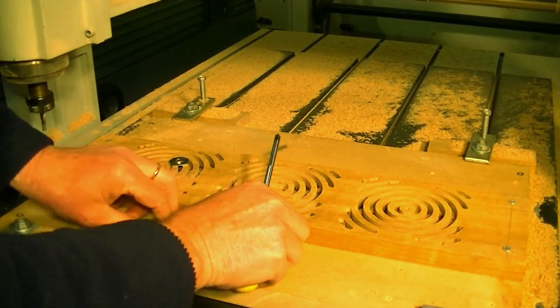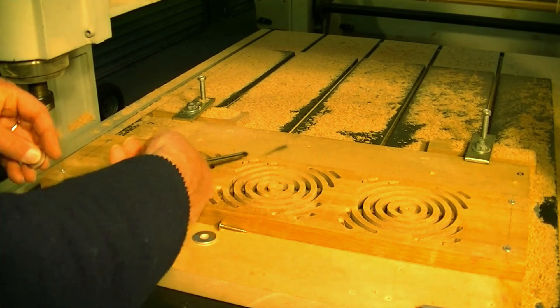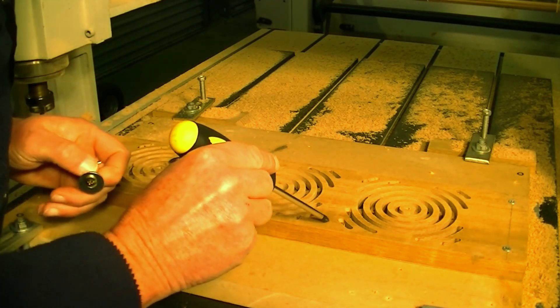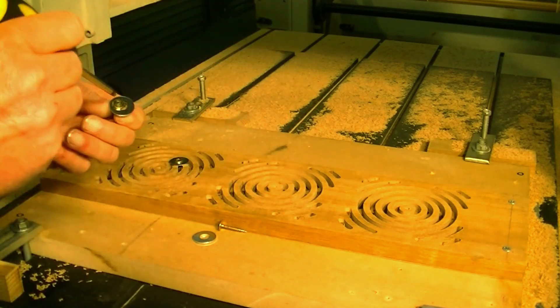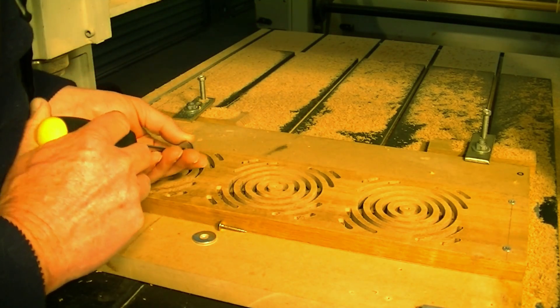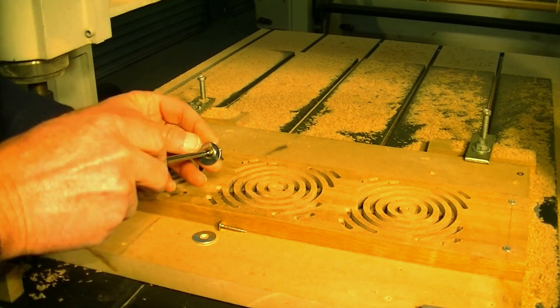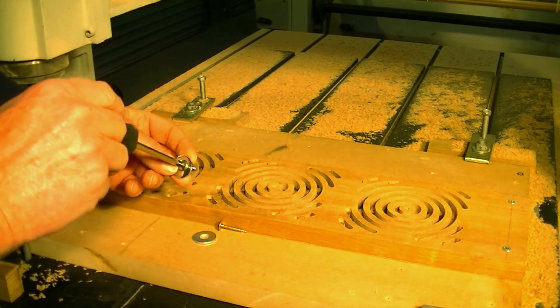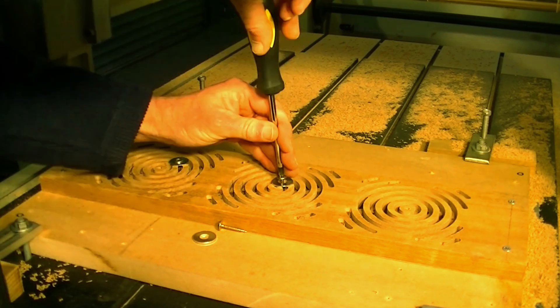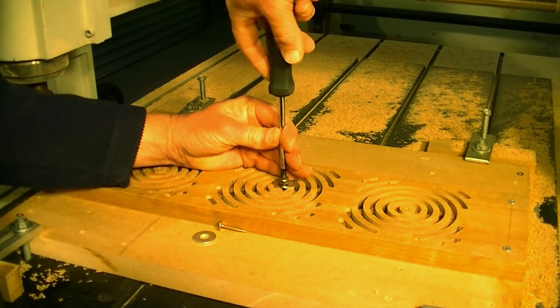So what I need to do now is cut them out using this CNC machine, because what I wanted to do, I want rounded corners. So to enable me to do as least amount of machining by hand as possible, well, you get the CNC to do it for you.